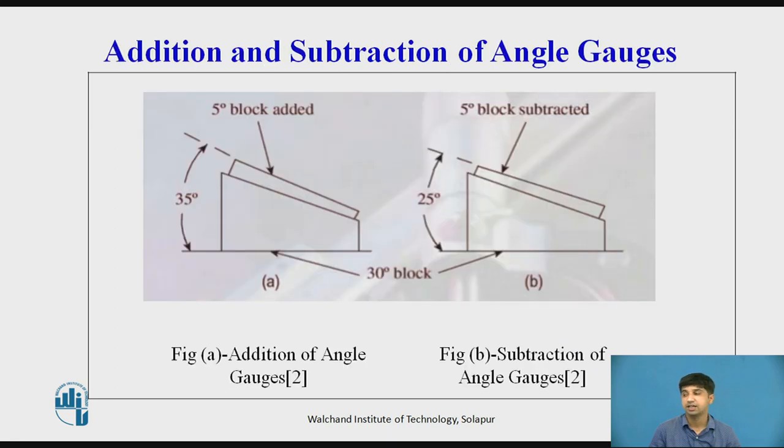Addition and subtraction of angle gauges. Each angle gauge is accurate to within one second and is marked with engraved V, which indicates the direction of the inclined angle. These gauges together with the square block can be so wrung that any angle between 0 degree to 360 degree can be set.